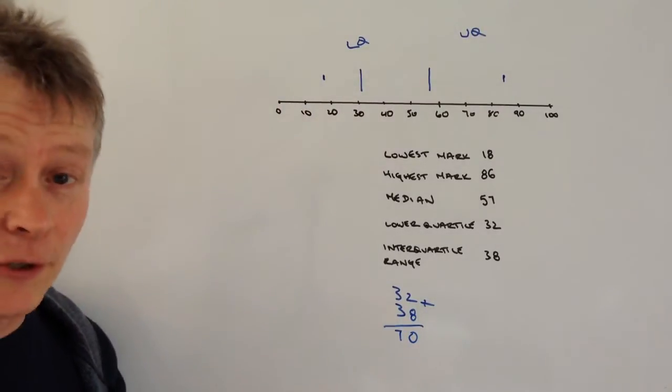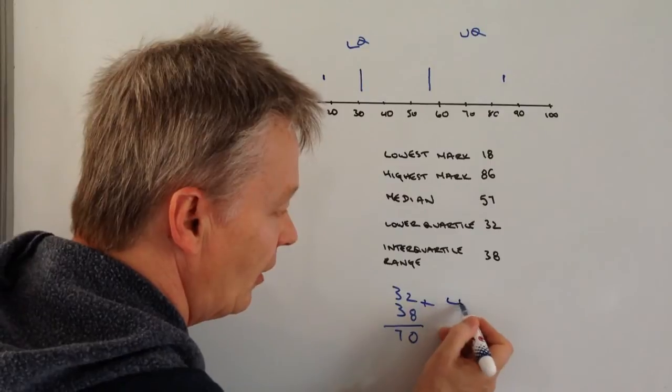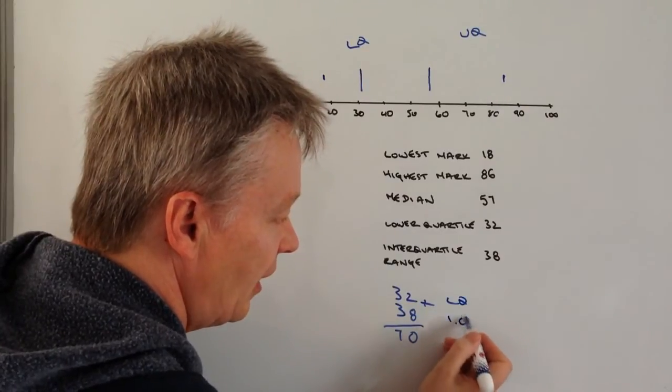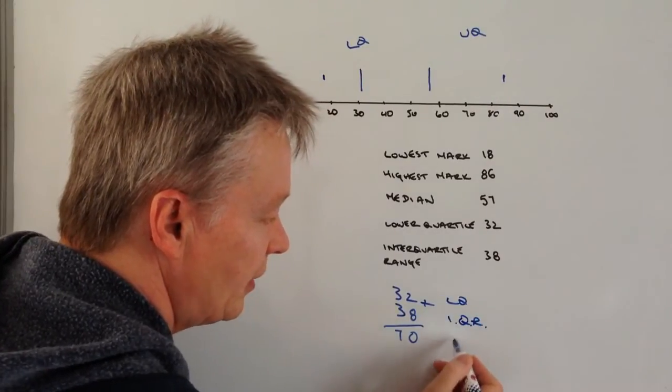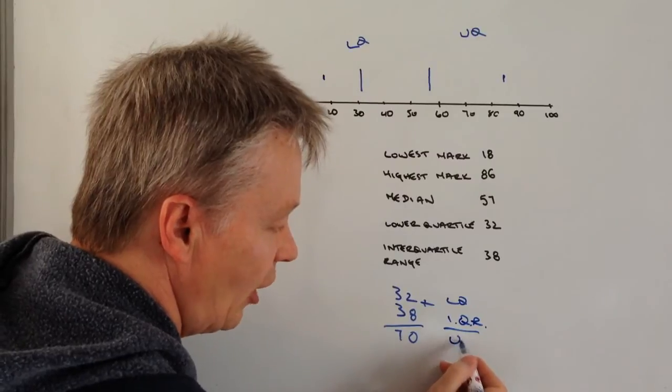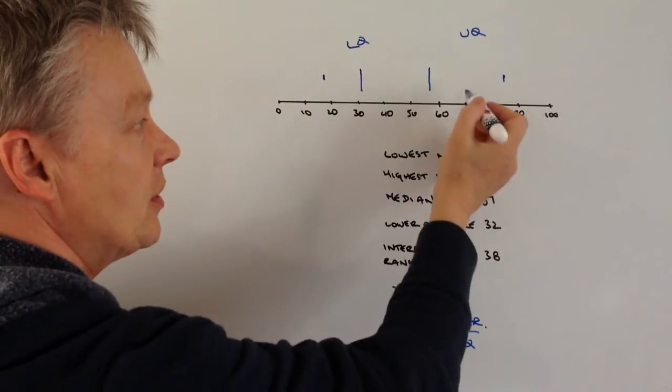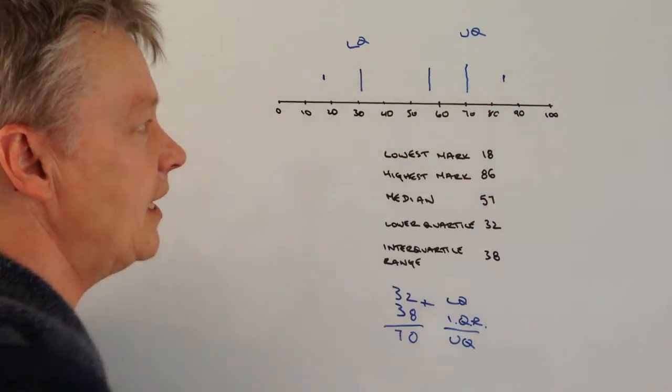I get 70. What it tells me is that the lower quartile plus the interquartile range will equal the upper quartile, which is going to be at this point here.